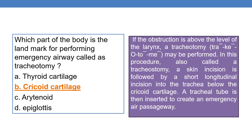Which part of the body is the landmark for performing the emergency airway procedure called tracheostomy? The answer is cricoid cartilage. If there is an obstruction of air above the level of the larynx, a tracheotomy — meaning incision — also called tracheostomy, meaning artificial opening, is performed.